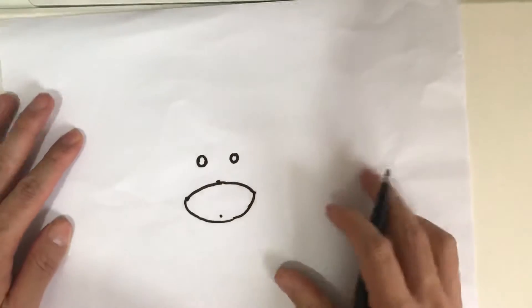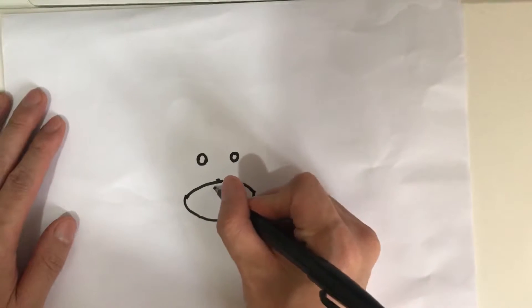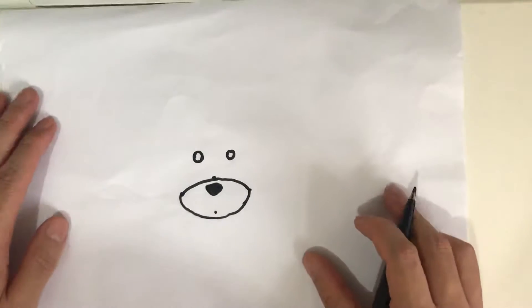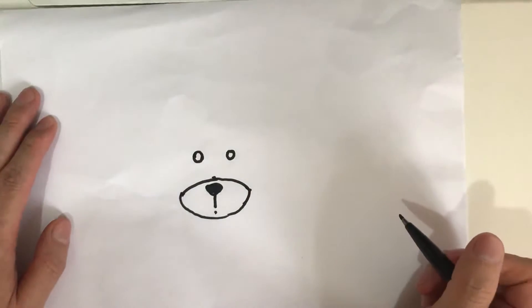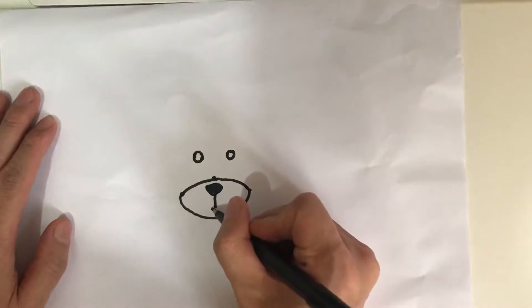Then draw an upside-down triangle like this, and draw a vertical line down. Then draw a smiley face.